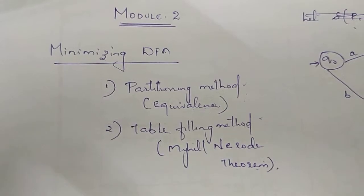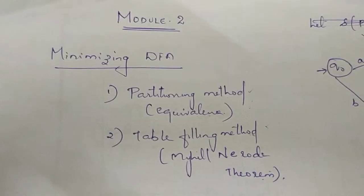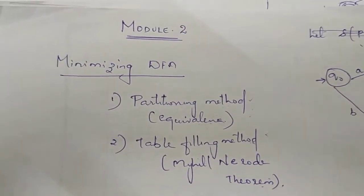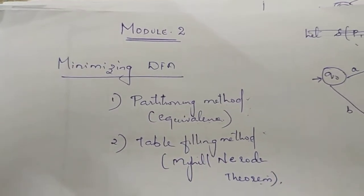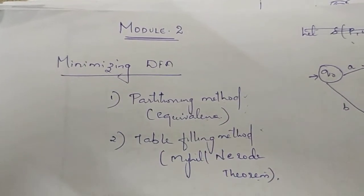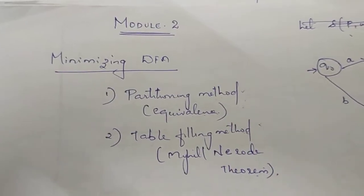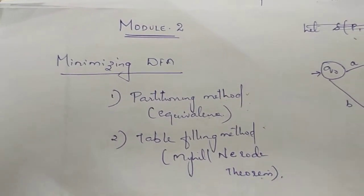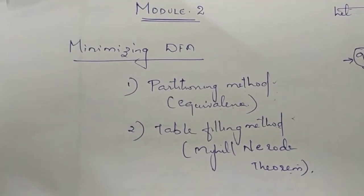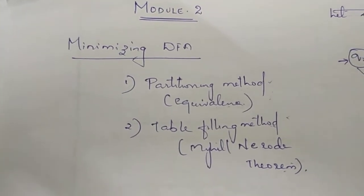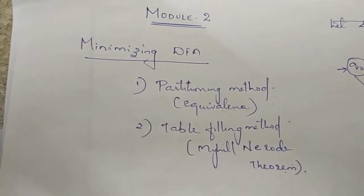If we have a DFA with a transition diagram of 5 states and we can reduce it to 4 states with the same output, then 4 states is better. We will automatically construct the minimal state — that is the minimal DFA, or Minimal Finite Automaton. We will construct this using the equivalence method.